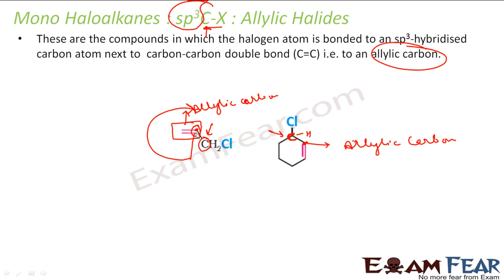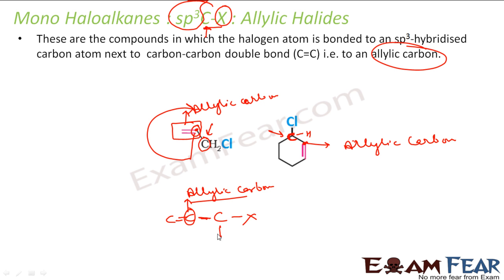So to summarize allylic halide: the hero carbon — the one attached to the halogen — is attached to an allylic carbon, which is a double-bonded carbon. That is why it is called allylic halide. The hero carbon itself is sp3, but it neighbors a double bond.